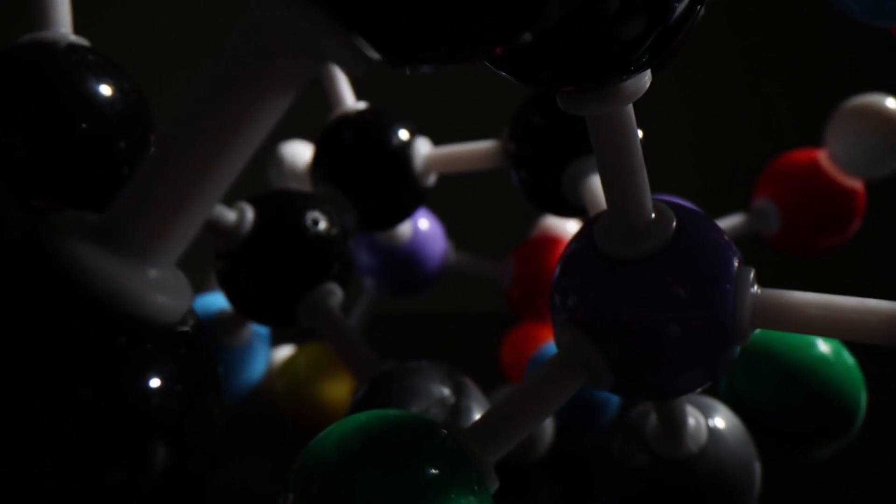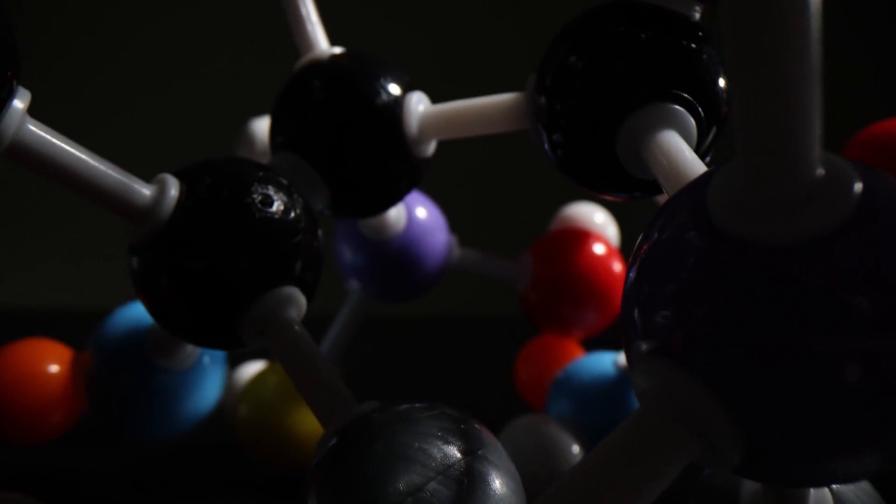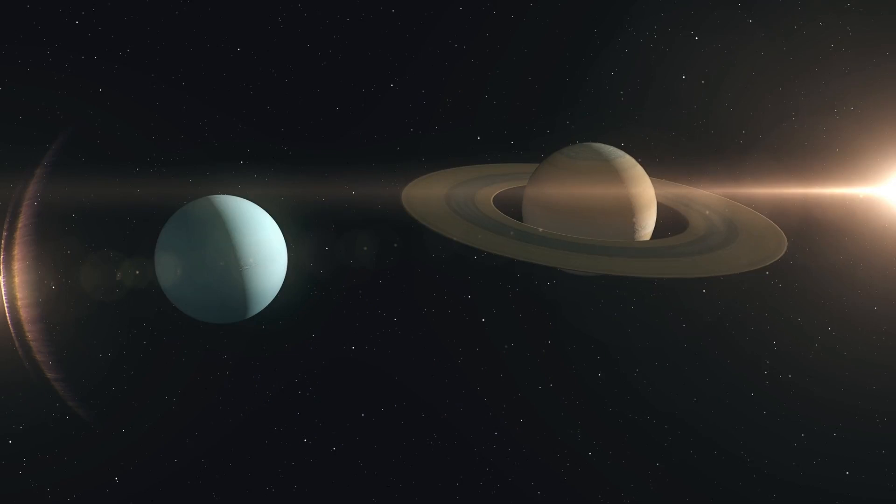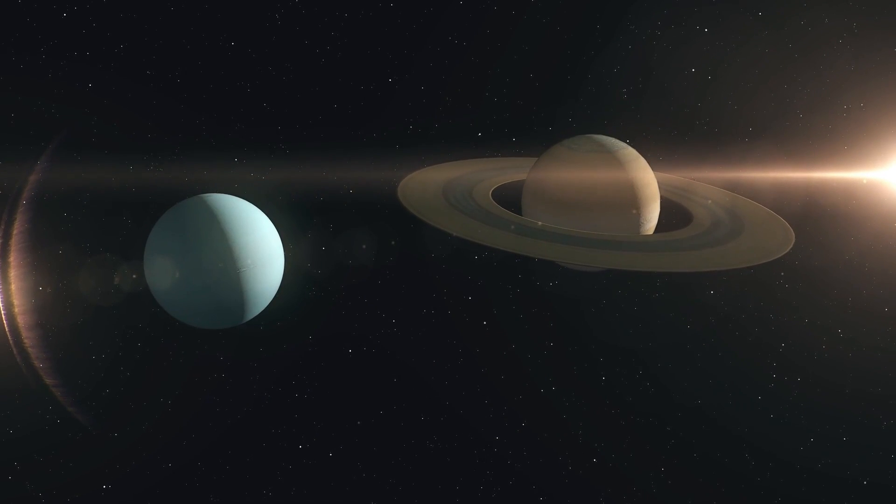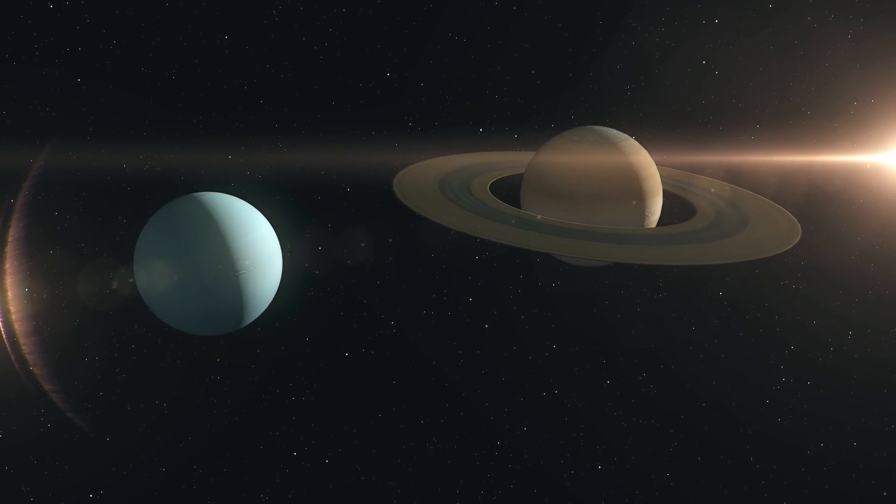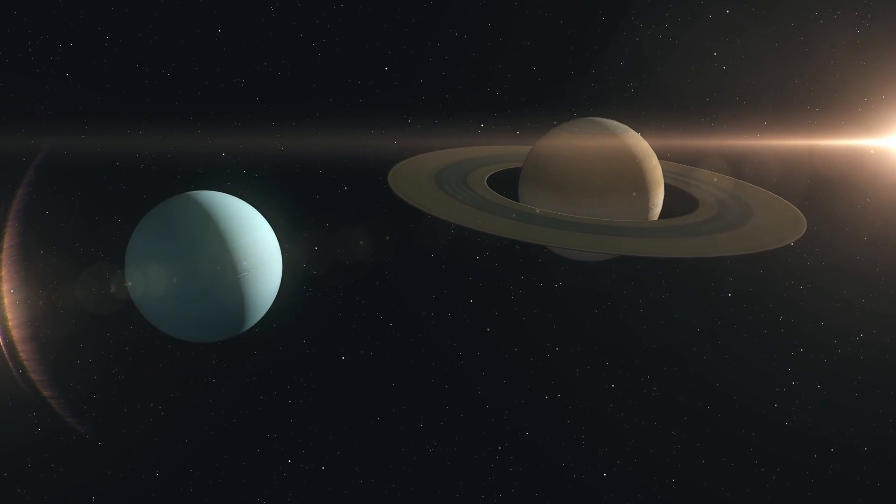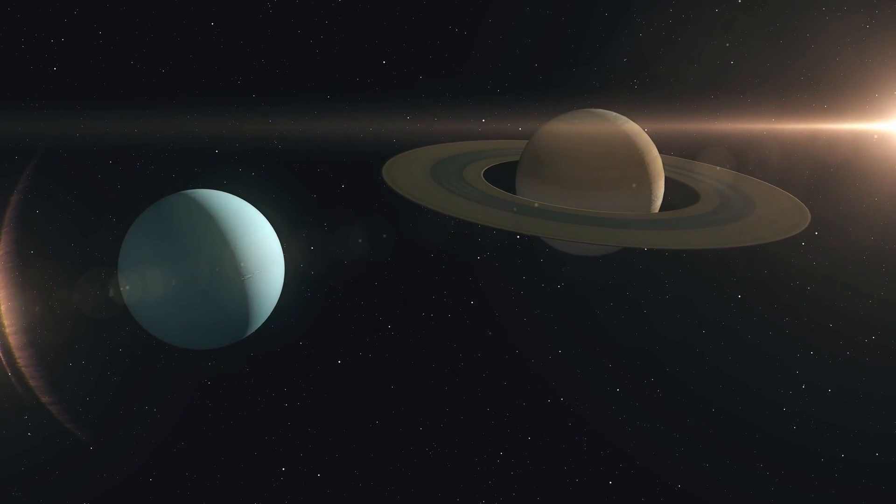As the object continued its journey, it passed close to a known Kuiper Belt object, a dwarf planet candidate roughly 300 kilometers in diameter. The interaction was subtle but measurable. The object's trajectory shifted slightly, as if influenced by the gravitational pull of the dwarf planet, but the change was not entirely consistent with a simple gravitational encounter.